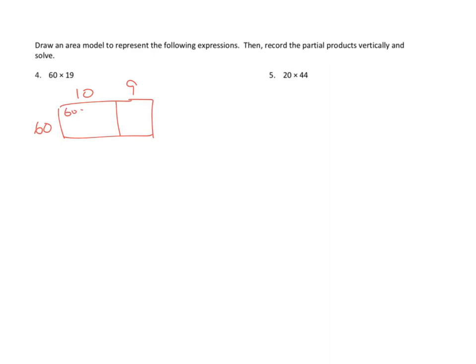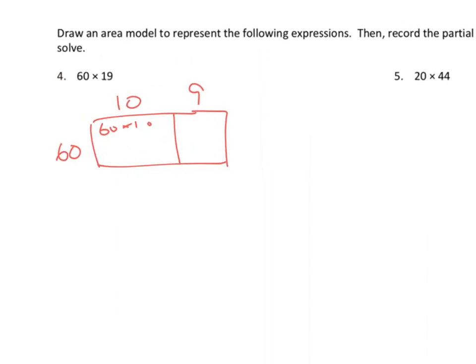That means that in between here, we've got 60 times 10. 60 times 10, or 6 tens times 1 ten, that's 6 times 100 or 600. And over here, we've got 60 times 9, which is 6 tens times 9, which is 54 tens or 540.